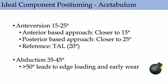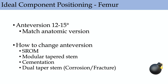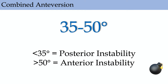For posterior approaches, anteversion is closer to 25 degrees given the risk of posterior dislocation. You reference the transverse acetabular ligament to judge version intraoperatively. Abduction is typically 35 to 45 degrees. For the femur, match anatomic version based on the calcar — typically 12 to 15 degrees of anteversion. Ways to change anteversion: modular stem, SROM stem, or cementation. Combined anteversion should be about 35 to 50 degrees — less risks posterior instability, greater risks anterior instability.